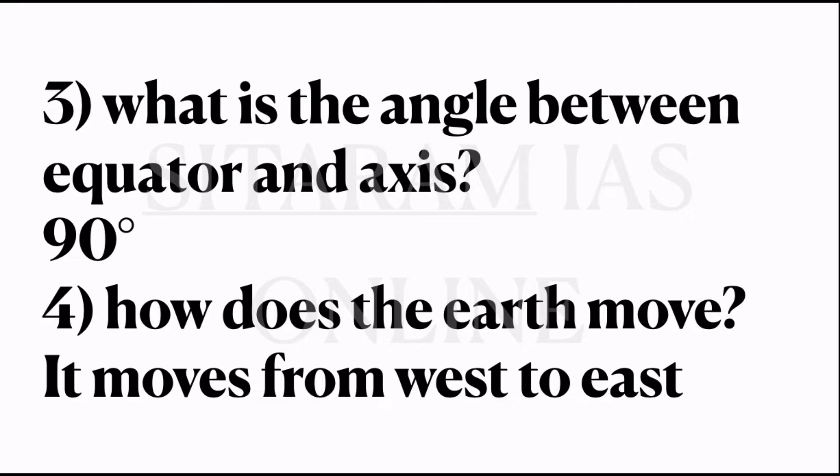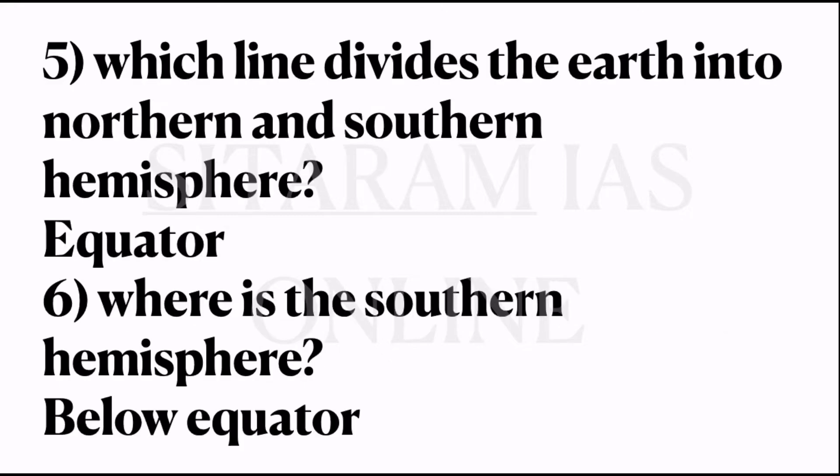How does the earth move? From which direction does the earth move? It moves from west to east. Fifth question: which line divides the earth into northern and southern hemisphere? It is the equator.